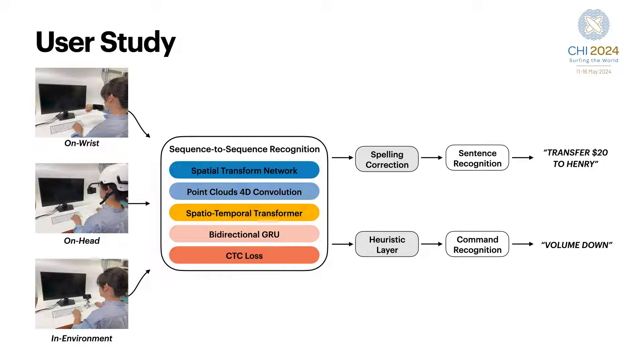To ensure the accuracy and reliability of our model's performance, we conducted a user study involving 10 participants. We positioned our depth sensing device at three distinct sensor locations: on the wrist, on the head, and in the environment, as shown on my slide here. The study comprised two main parts, one for sentence recognition and the other for command detection.